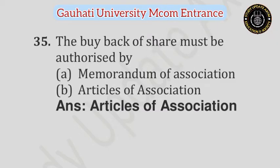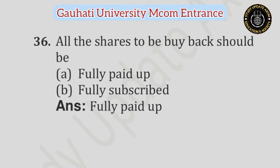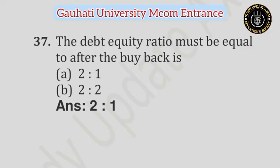Question number 35: The buy back of shares must be authorized by — Option A: Memorandum of Association, Option B: Articles of Association. Answer is Articles of Association. Question number 36: All the shares to be bought back should be — Option A: Fully paid up, Option B: Fully subscribed. Answer is Fully paid up. Question number 37: The debt equity ratio must be equal to after the buy back is — Option A: 2:1, Option B: 2:2. Answer is 2:1.